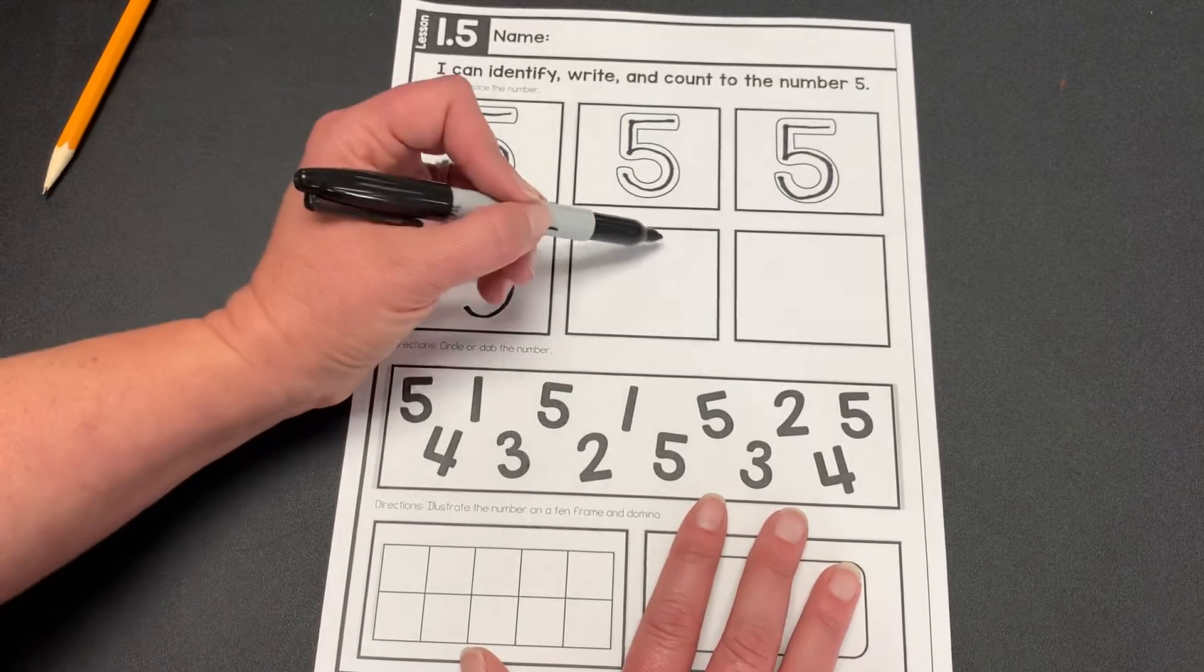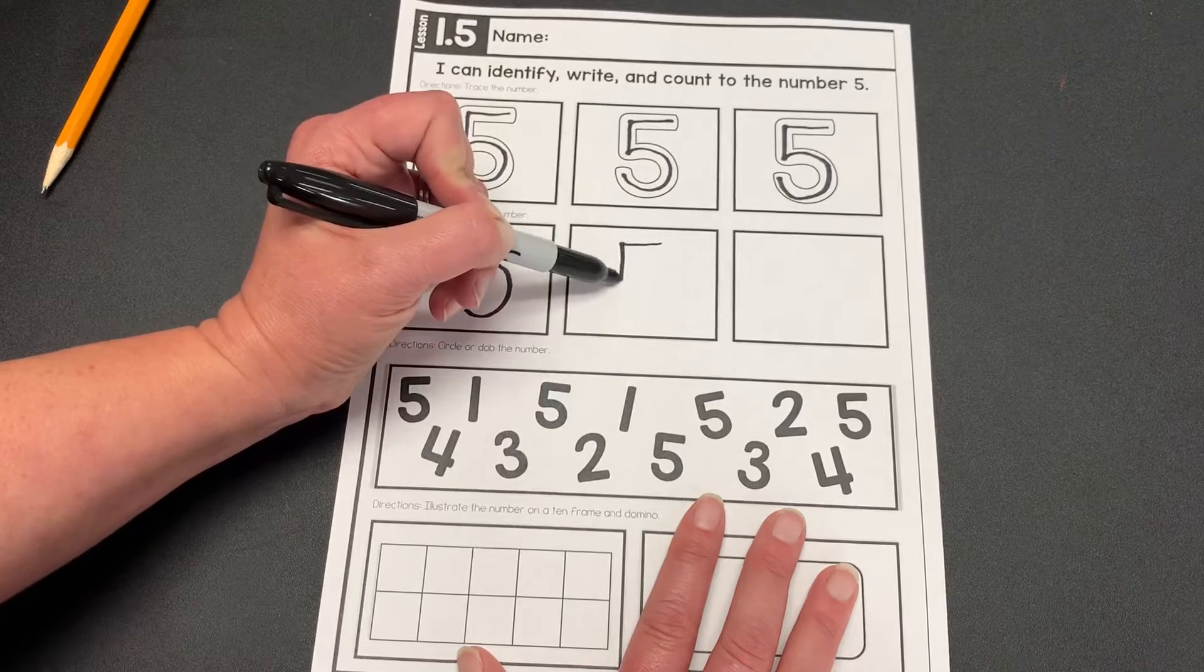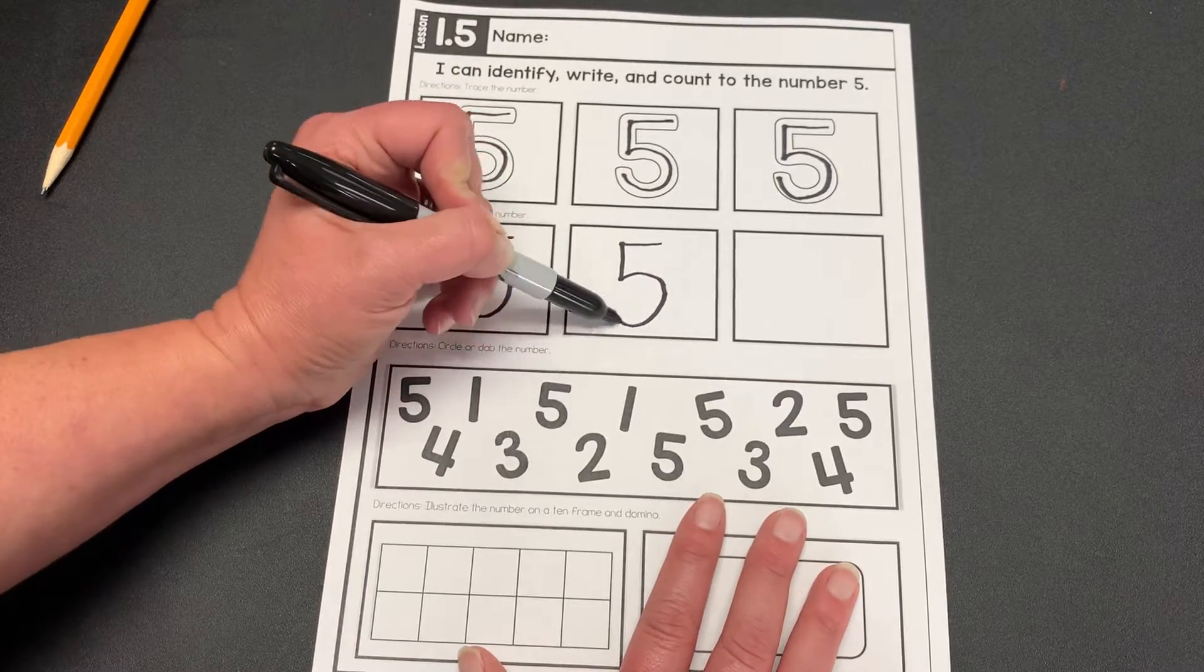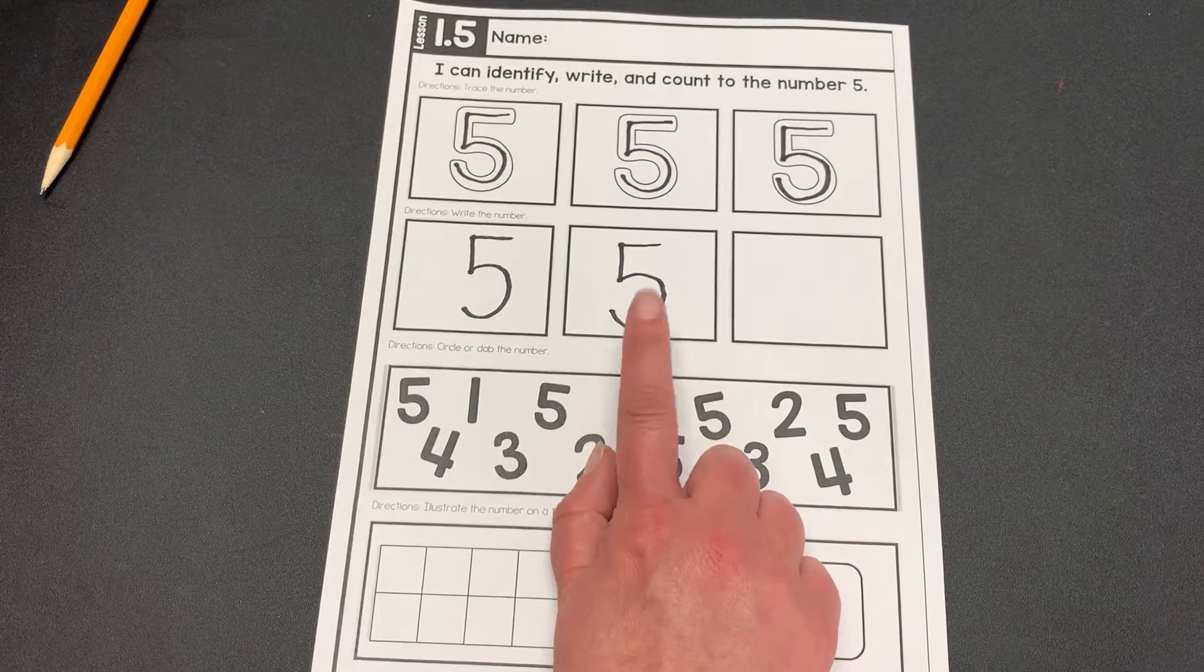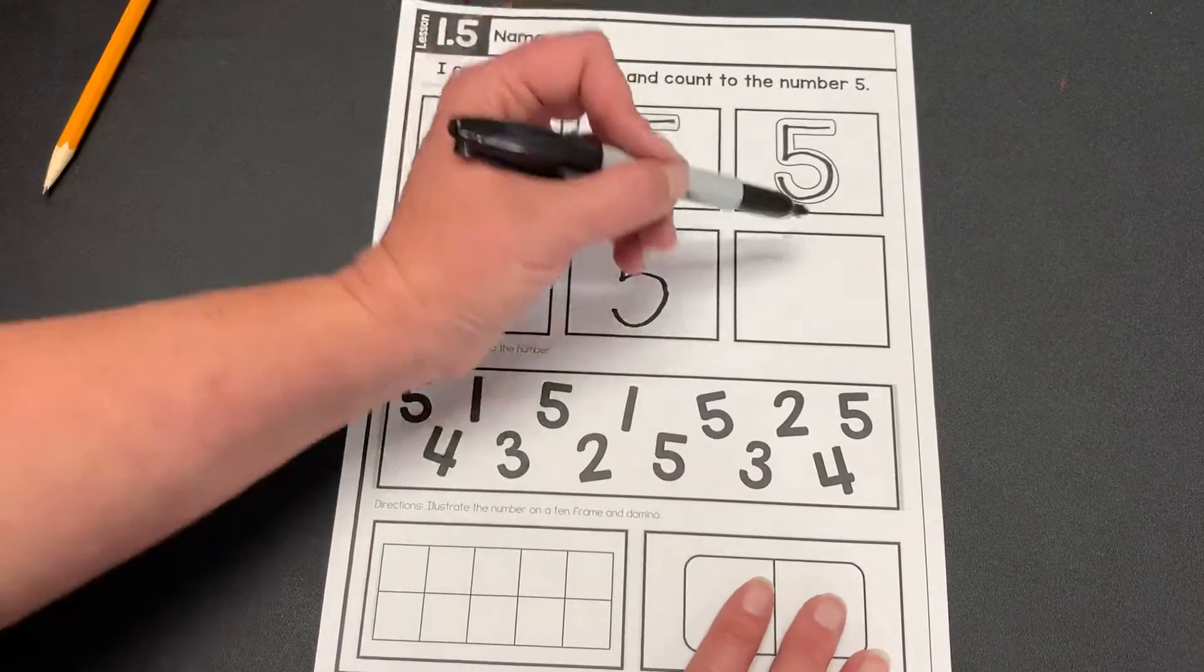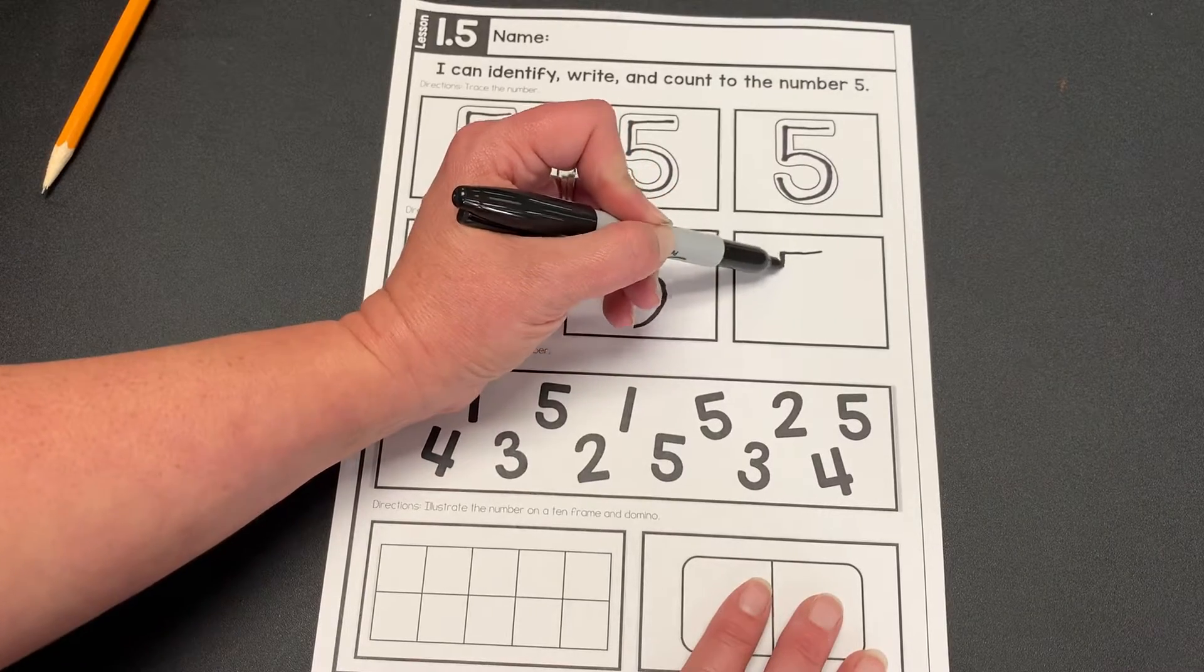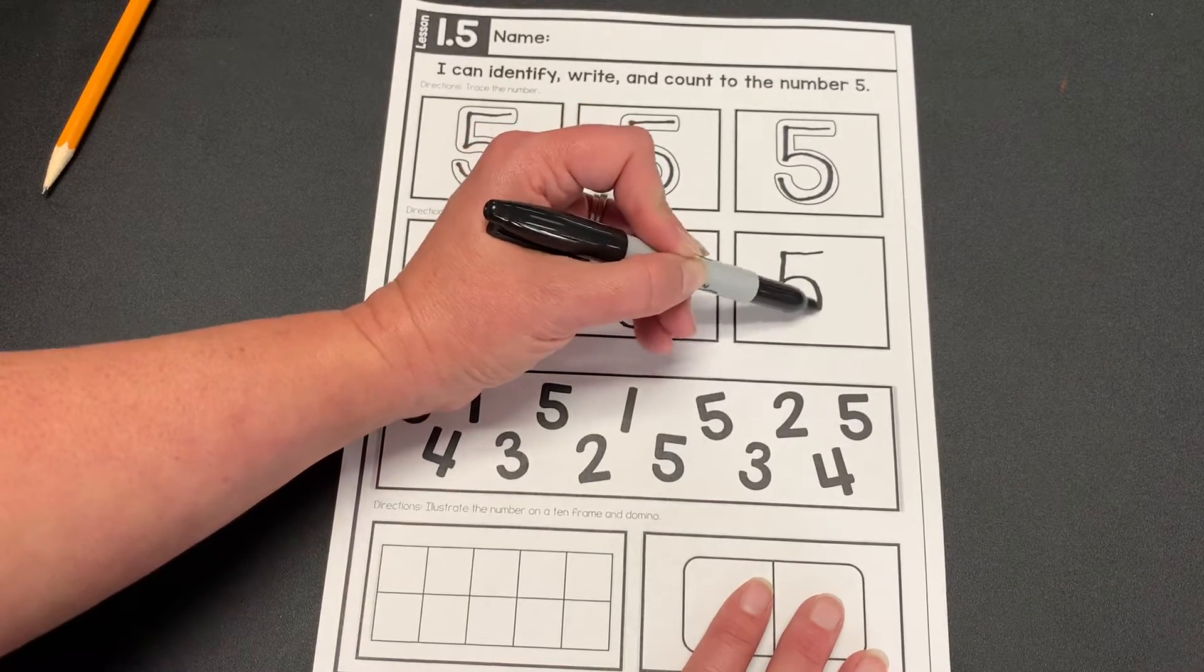Okay, let's try another one. Back, down, curve, around. Notice how I don't pick up my pen the whole time. It stays on the paper. Don't pick it up. Back, down, curve, around.